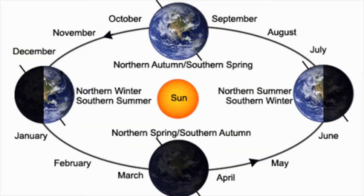Ancient Sanskrit literature divides the year into six seasons, adding an intermediate season between each of the three main seasons — summer, winter, and monsoon. They have added intermediate seasons called Ritus. They are Vasantha, Grishma, Varsha, Sharad, Hemanta, and Shishira.